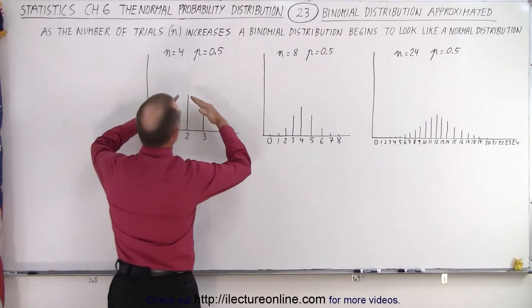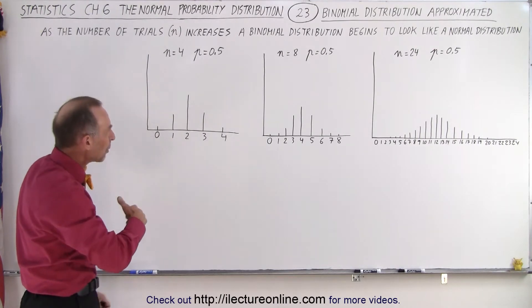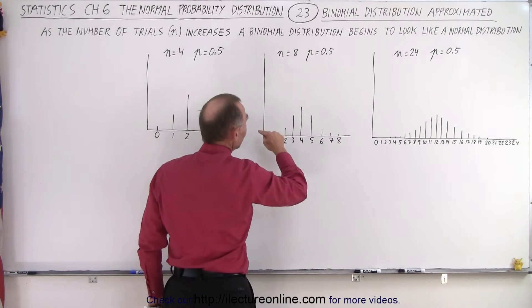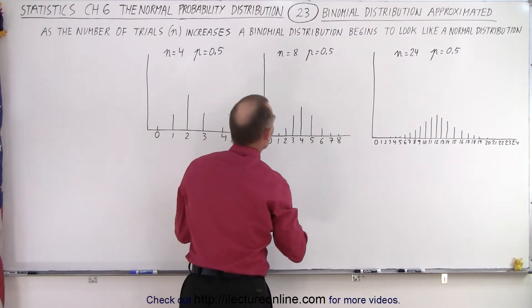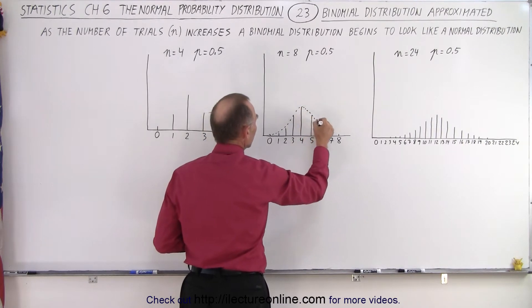So it doesn't really look like a normal distribution. But now when we increase the number of trials to n equals 8, notice that it begins to look a little bit more like the shape of a normal distribution.